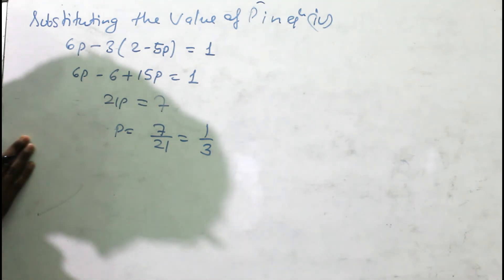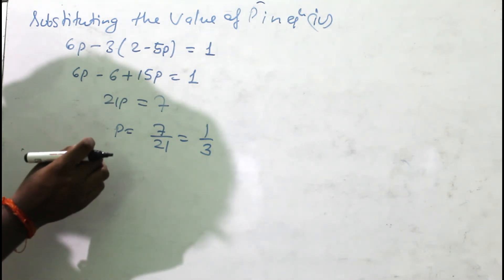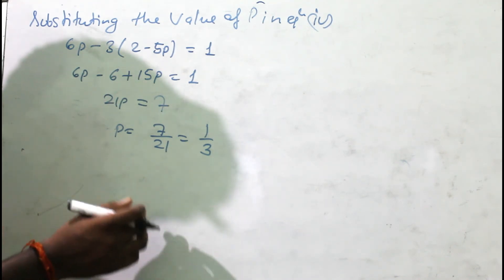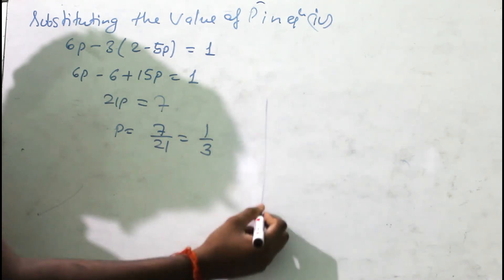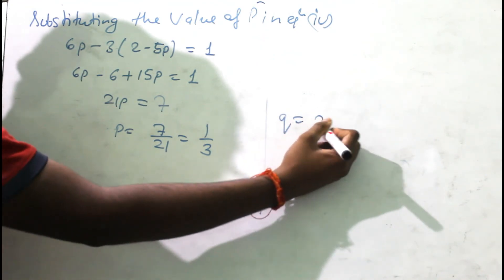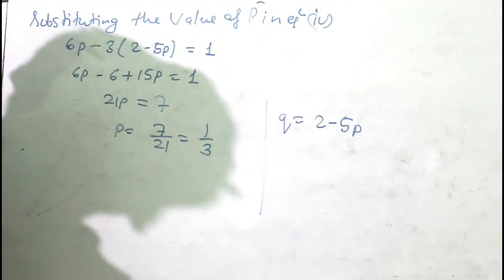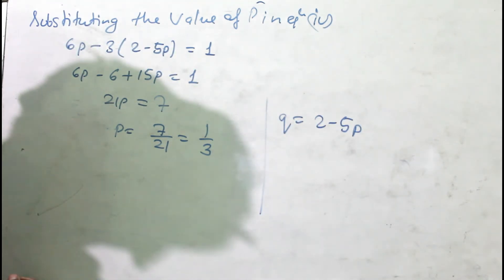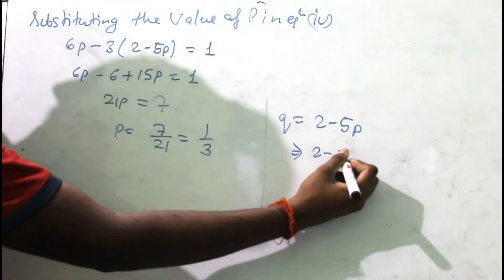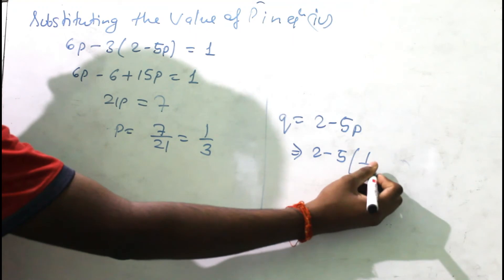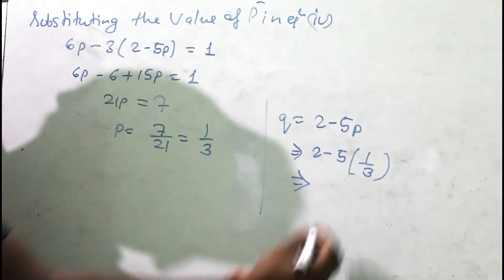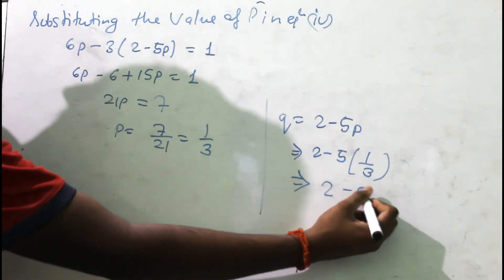Now let us find the value of q. We had q = 2 - 5p. Substituting p = 1/3: q = 2 - 5 × (1/3) = 2 - 5/3.